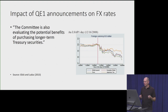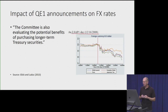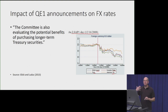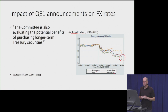What about foreign exchange rates? Looking at a December 16, 2008 announcement that the Fed was evaluating the potential benefits of purchasing longer-term Treasury securities, upon that announcement the value of the pound, the euro, the Canadian dollar, and the Japanese yen all gained value against the U.S. dollar — in other words, the U.S. dollar depreciated. Three of them depreciated by two percentage points or more, which is a very large move in foreign exchange rates. So announcements matter for foreign exchange rates.